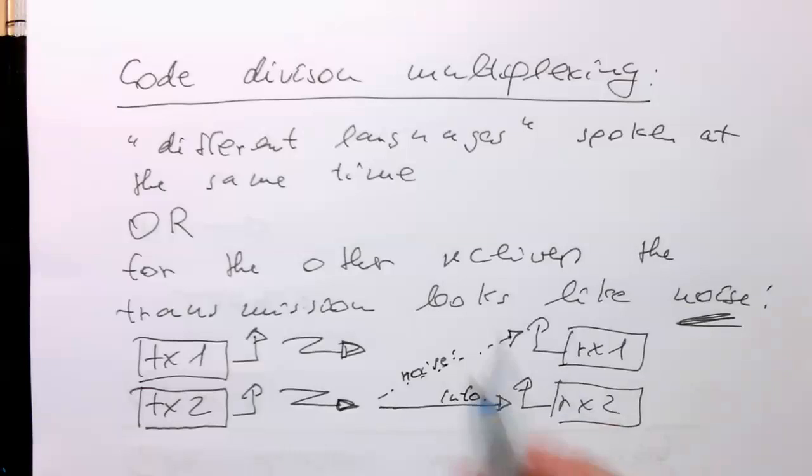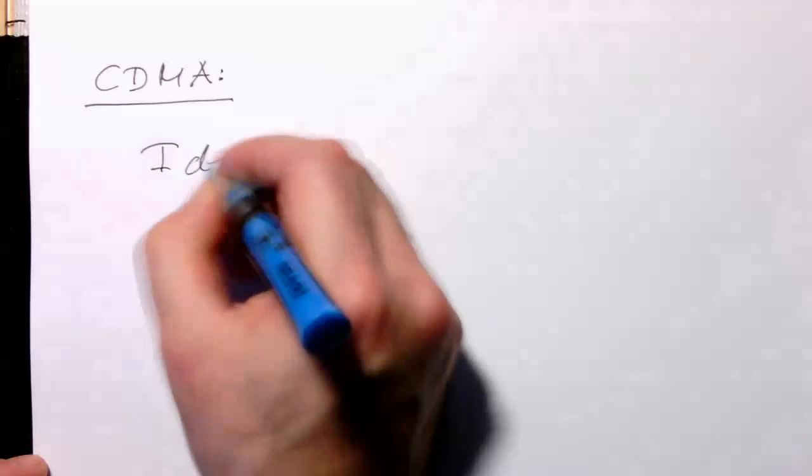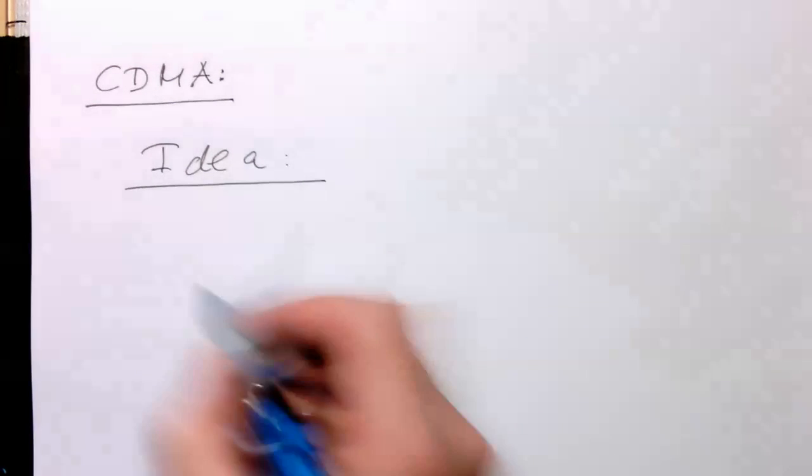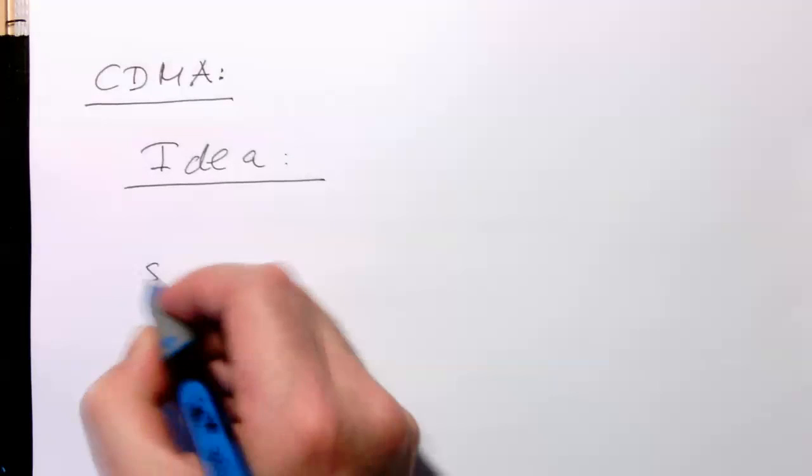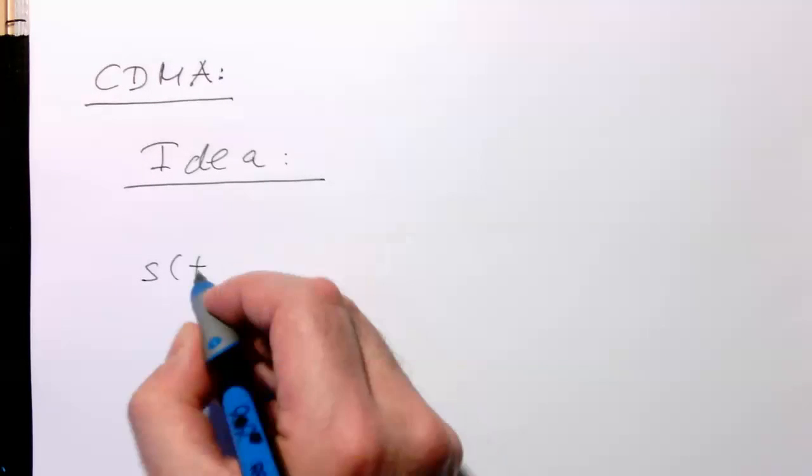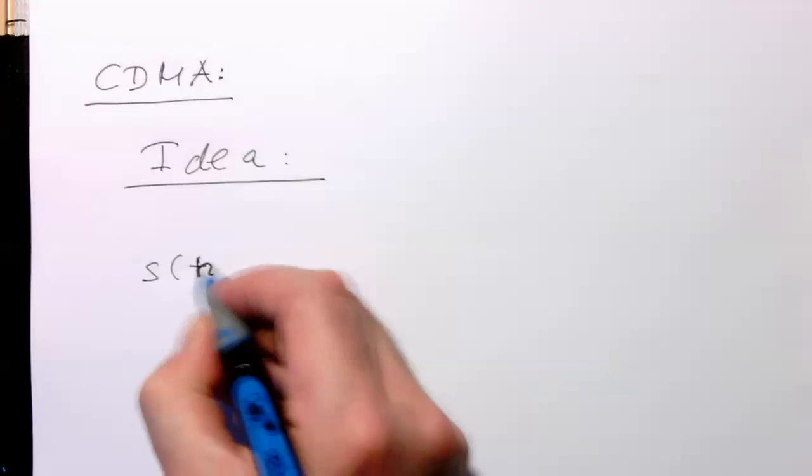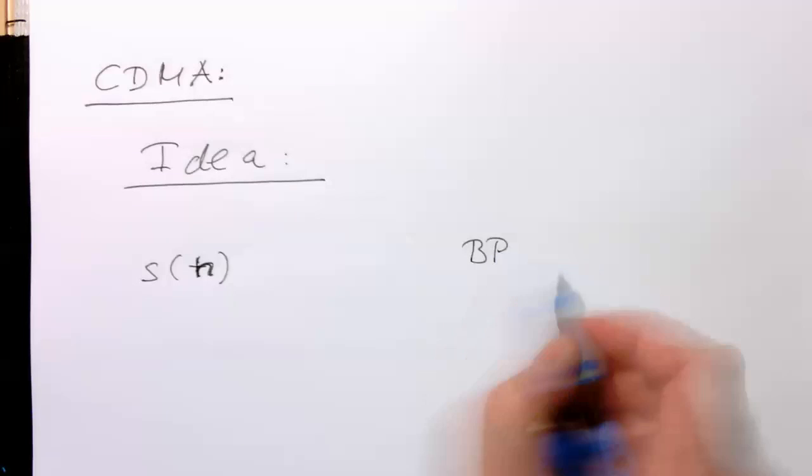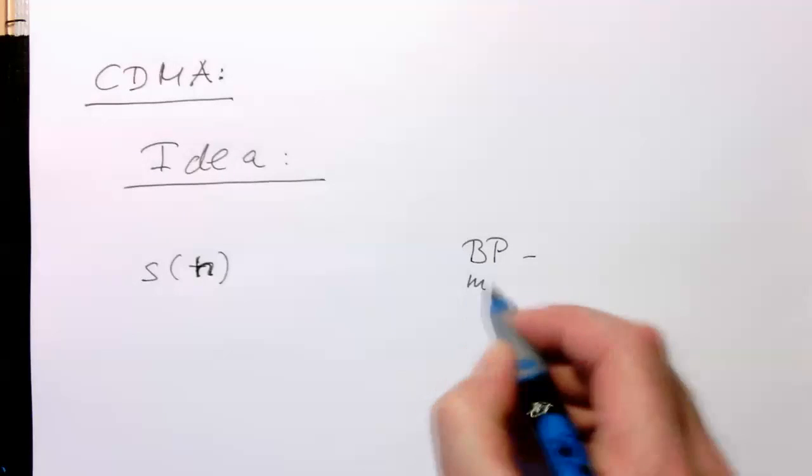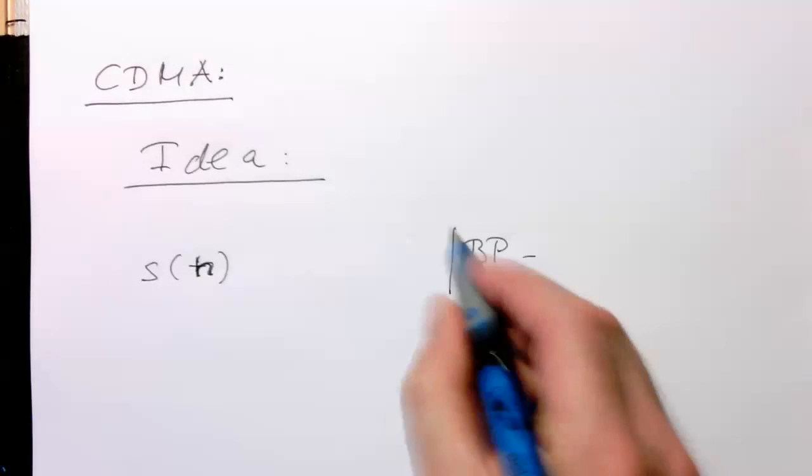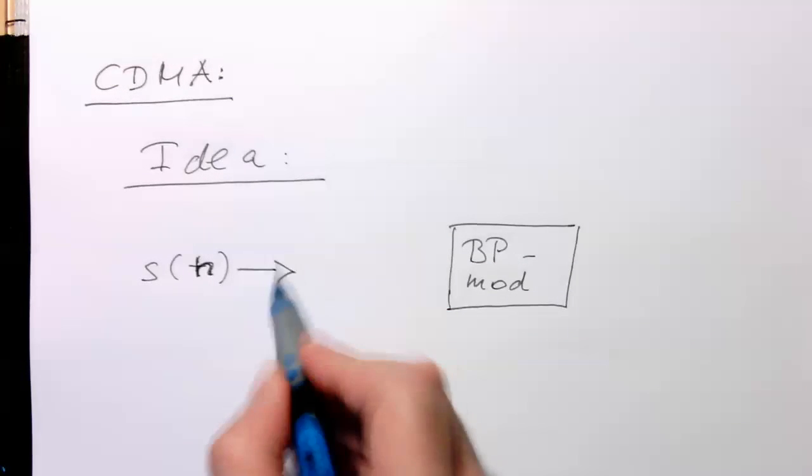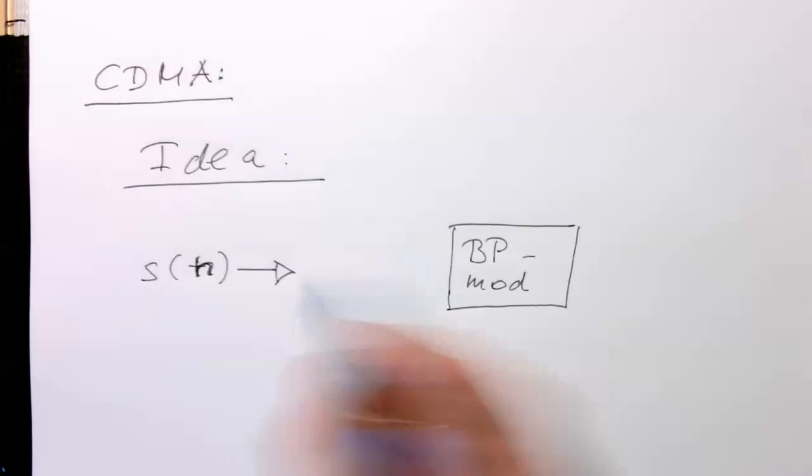So let's continue with the CDMA. So what's the general idea behind this? So remember, we have our symbol stream s of t, or I should call this s of n actually. And this would usually go straight into our bandpass modulator.